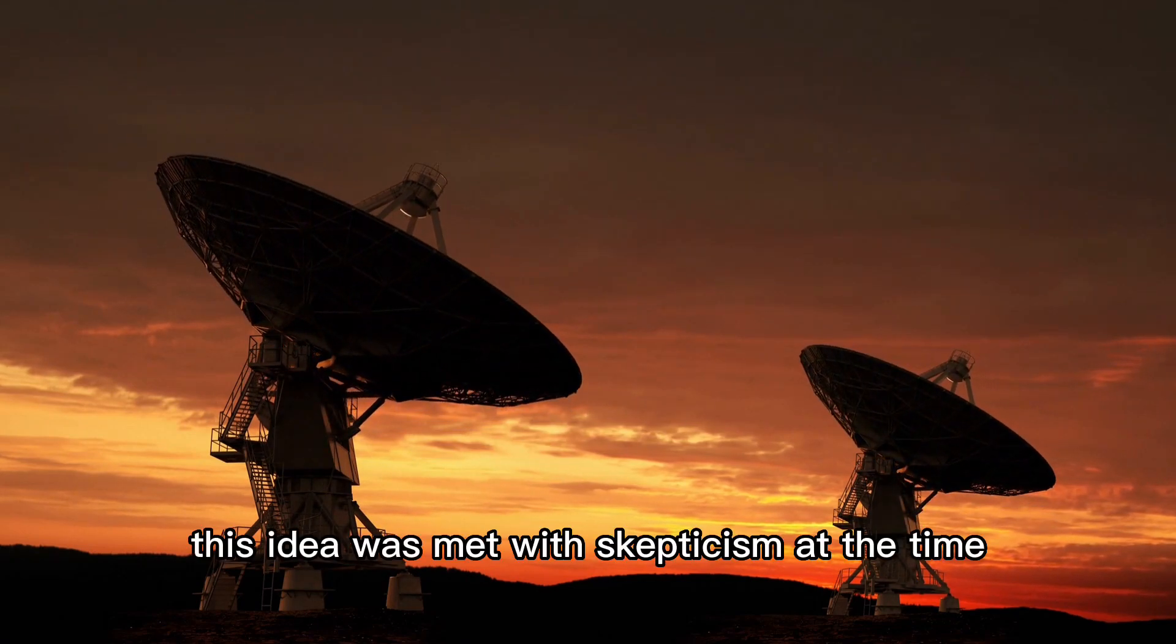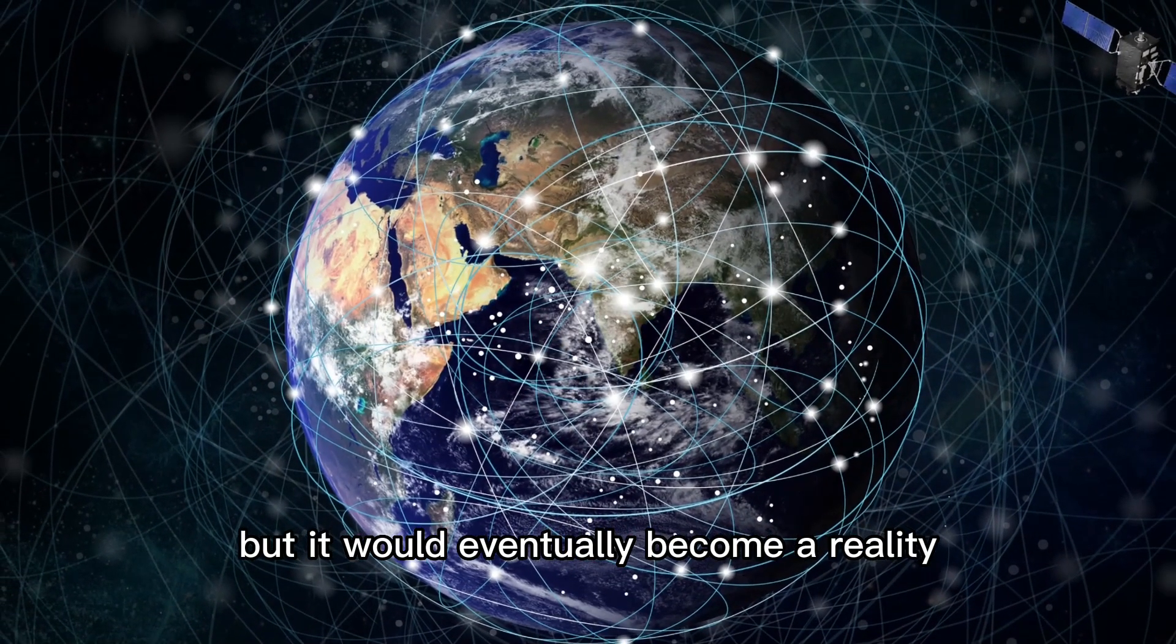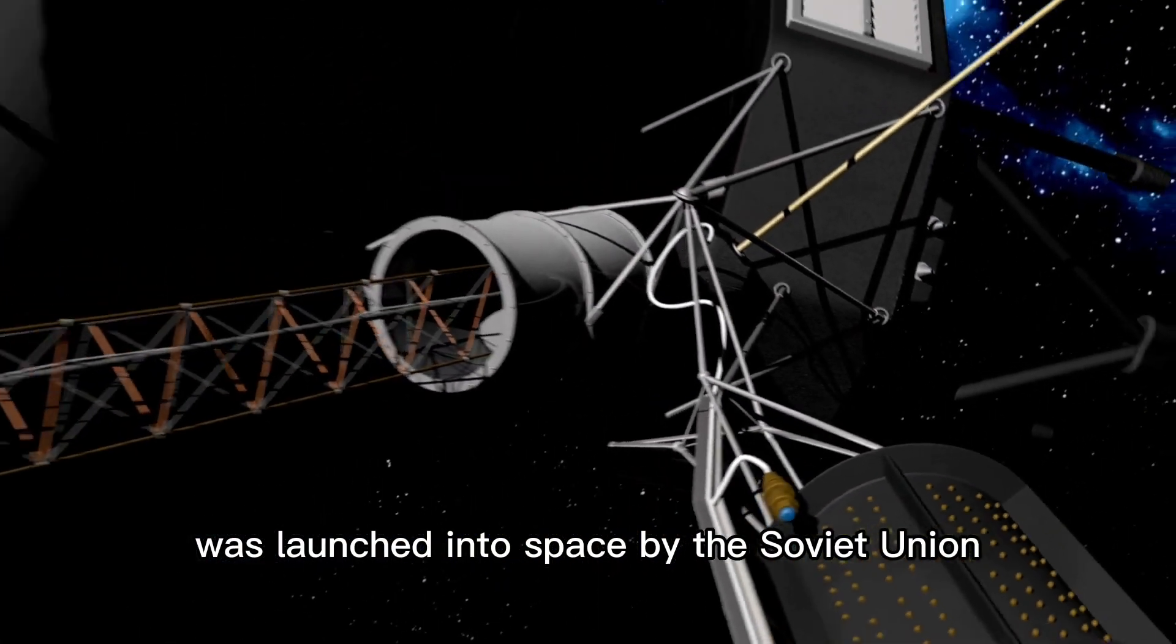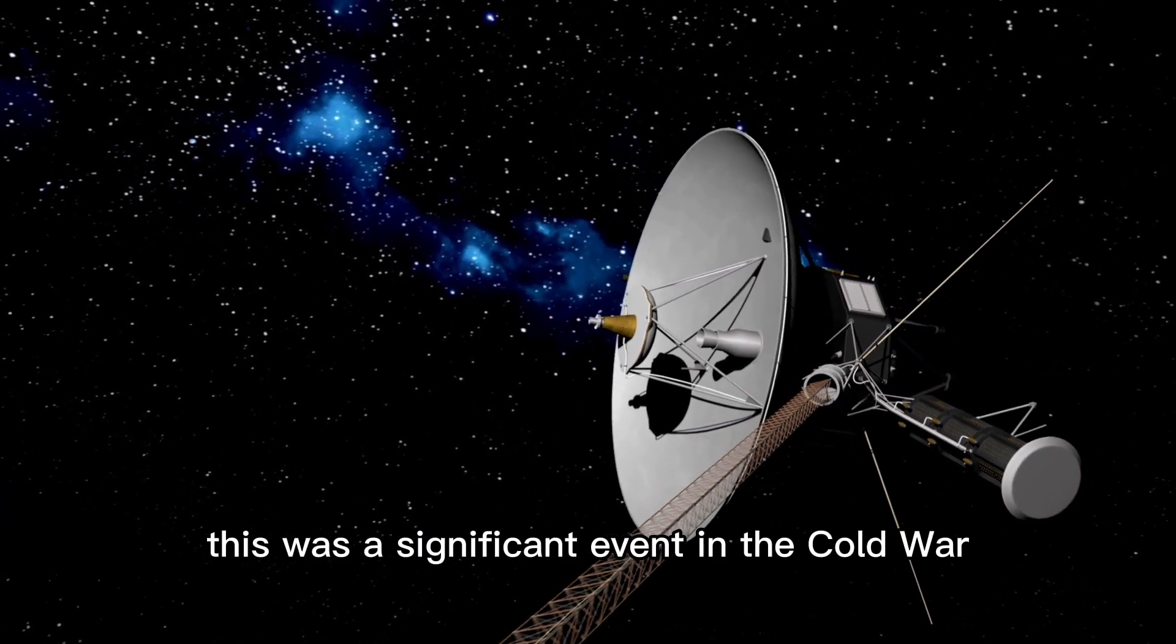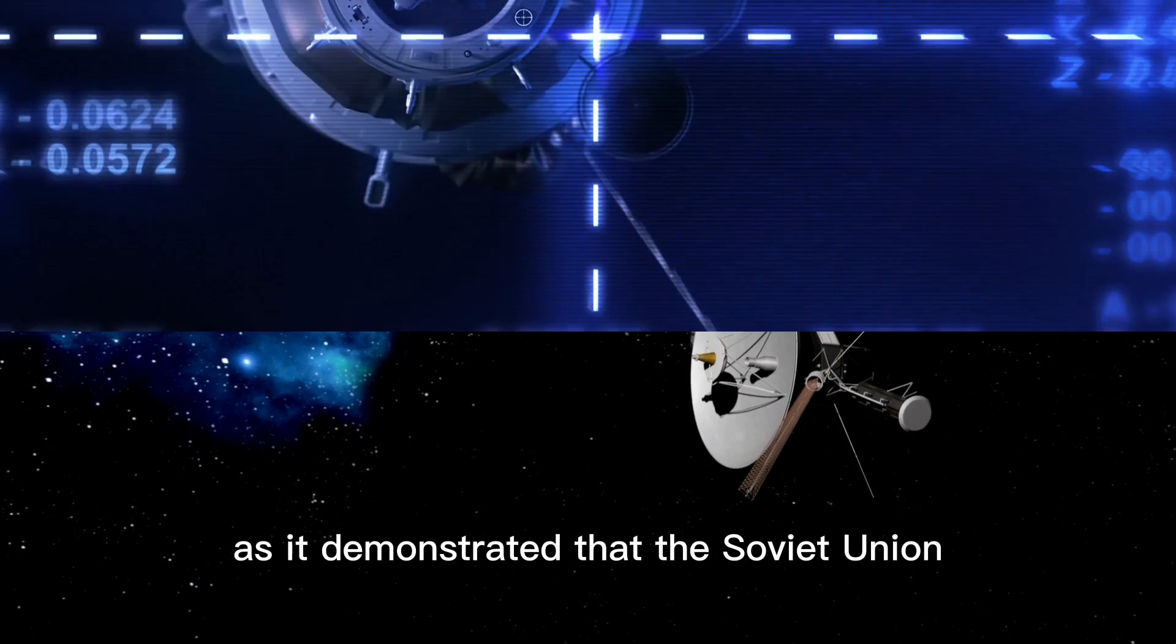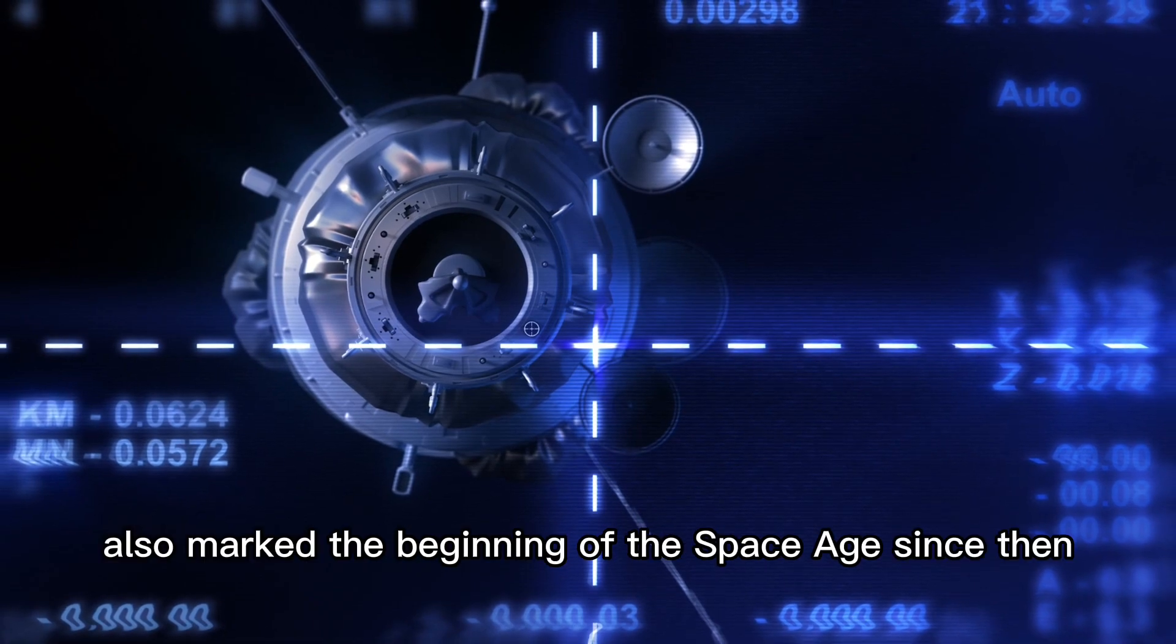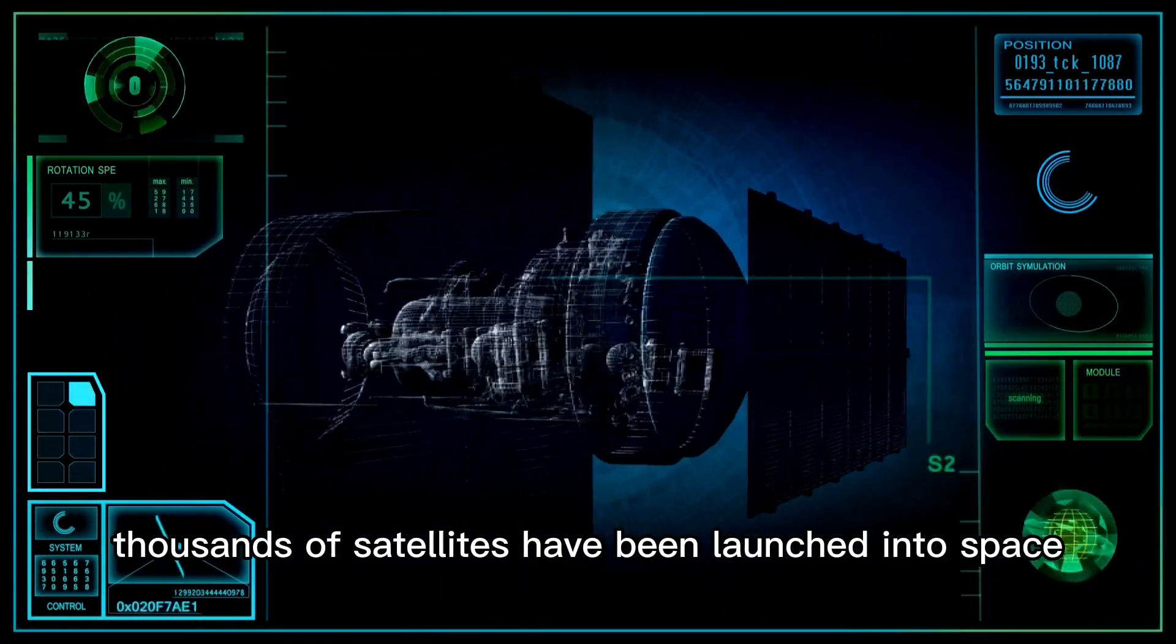The first artificial satellite, Sputnik 1, was launched into space by the Soviet Union on October 4, 1957. This was a significant event in the Cold War as it demonstrated that the Soviet Union could launch a missile that could reach the United States. The launch of Sputnik 1 also marked the beginning of the Space Age. Since then, thousands of satellites have been launched into space, each one serving a unique purpose.